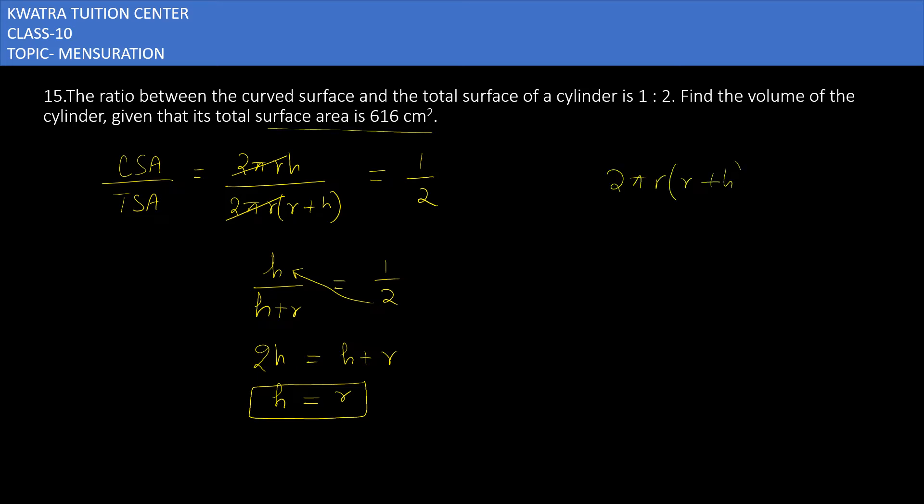Now you are given the total surface area. Total surface area formula is 2πr(r+h) equals 616. We will substitute h so that we can find the value of r first. So it will be 2πr times 2r equals 616.